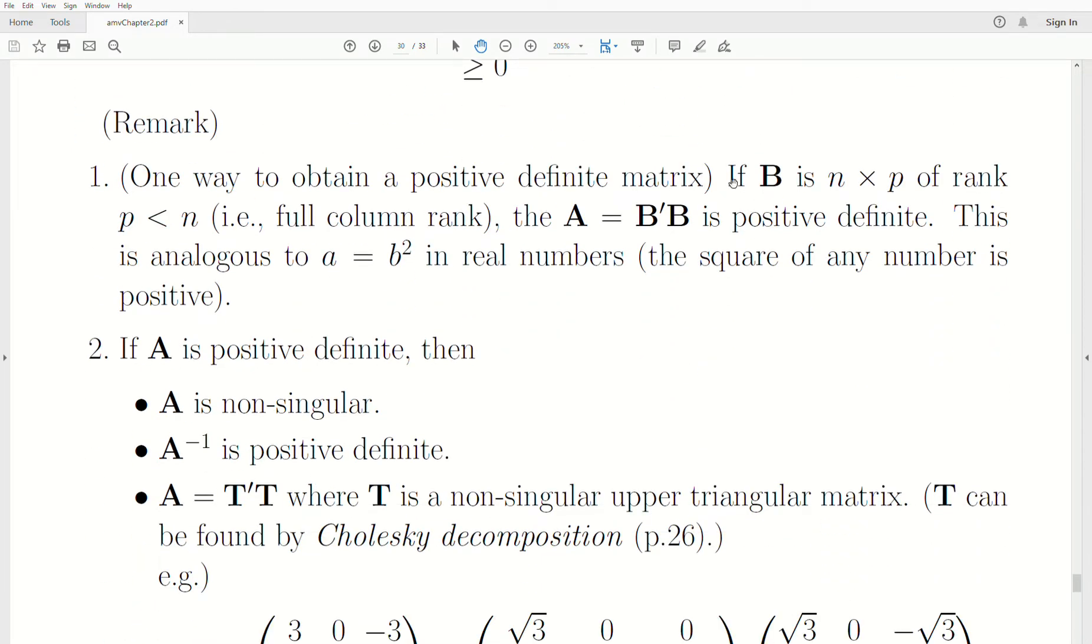Now, one way to obtain a positive definite matrix is to create a matrix B that is full column rank. It's n by p, but it's full column rank. That tells us that n is greater than or equal to p, because to be full column rank, there's p independent vectors, which has to be less than the number of rows. And then just multiply B^T*B to create a matrix A, and then we know it's positive definite. And it's analogous to taking a number, any number, squaring it, and then that's our new number. That new number is always positive.